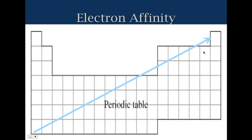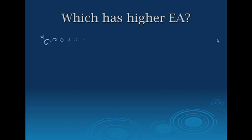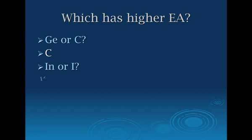So who's got the higher electron affinity? Germanium or carbon? Carbon wins that battle. Indium or iodine? Halogens always win this battle, so iodine. And magnesium or fluorine? Fluorine is the biggest and baddest of them all, so fluorine, yay fluorine.